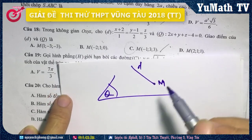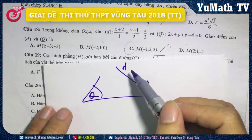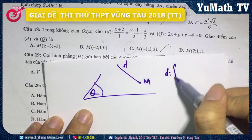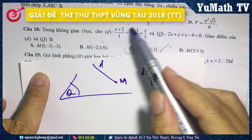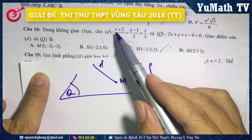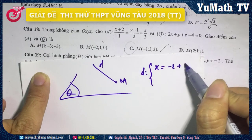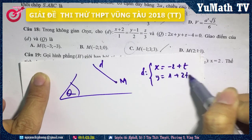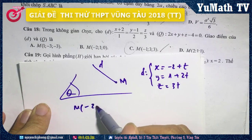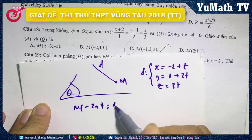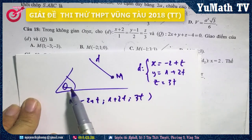Câu số 18: Do M nằm trên đường thẳng D nên tọa độ điểm M theo phương trình tham số của D. Đường thẳng D cho dạng chính tắc, đặt bằng T thì: x = -2 + T, y = 1 + 2T, Z = 3T. Điểm M có tọa độ (-2+T, 1+2T, 3T). Tiếp theo, do M cũng nằm trên mặt phẳng (Q) nên tọa độ M thỏa mãn phương trình mặt phẳng (Q).